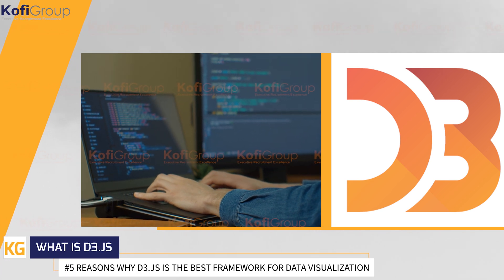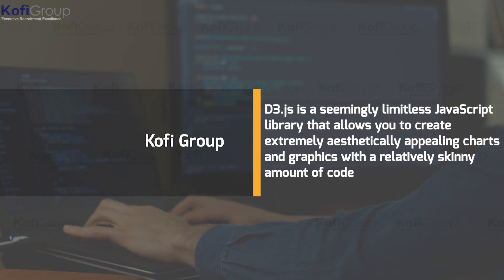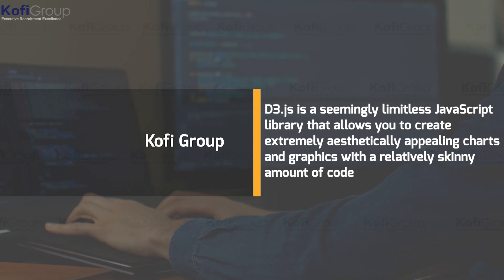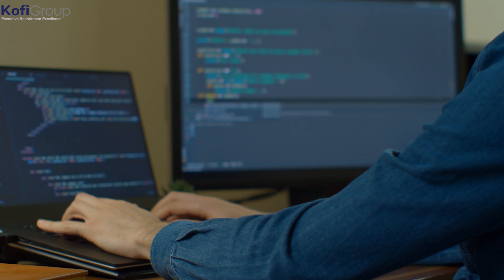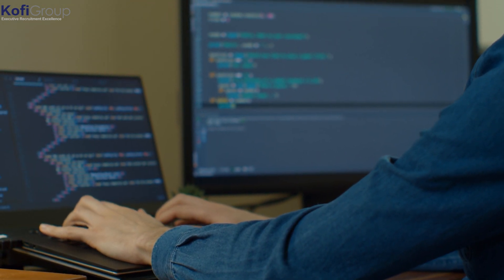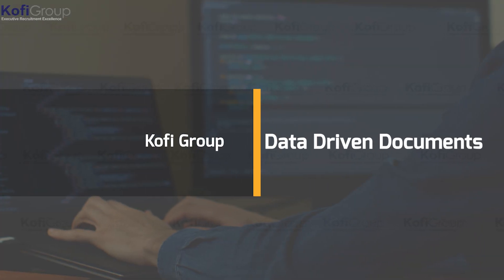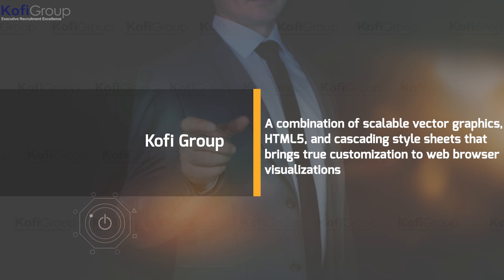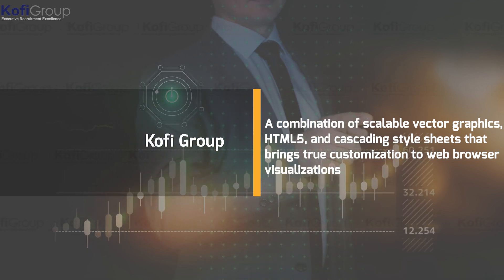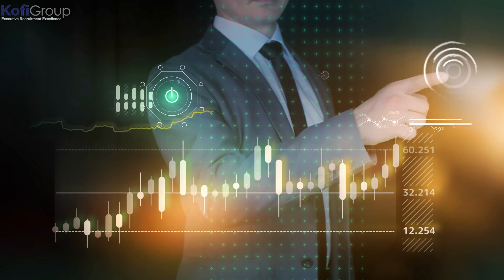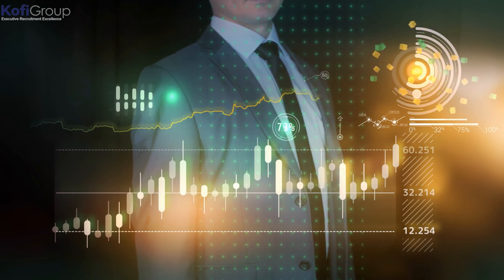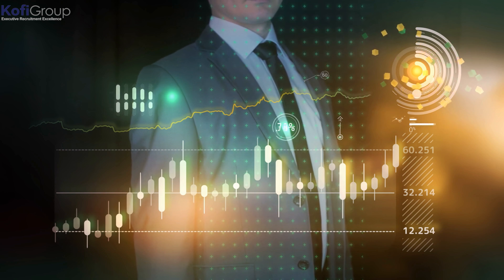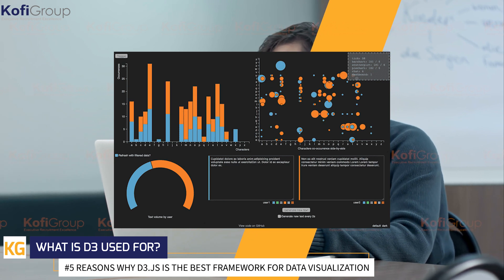What is D3.js? In short, D3.js is a seemingly limitless JavaScript library that allows you to create extremely aesthetically appealing charts and graphs with a relatively small amount of code. It's the framework you use when you want the wow factor and not the meh factor. The three D's in D3.js stand for Data-Driven Documents. It's a combination of scalable vector graphics, HTML5, and cascading style sheets that brings true customization to web browser visualizations — the spiritual successor to Protovis, built with a focus on web standards, increased expressibility, and drastically improved performance.